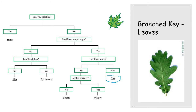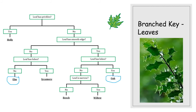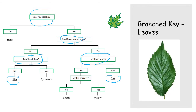That therefore identifies it as an oak leaf — and many of you will be familiar with the oak leaf. For the next leaf: 'leaf has prickles' — again no. 'Does it have smooth edges?' — in this instance it has quite rugged edges, so no. We go down to 'leaf has lobes' — it certainly does — therefore it is an elm. One thing to notice is that the question 'leaf has lobes' appears twice in the key, and that is fine.